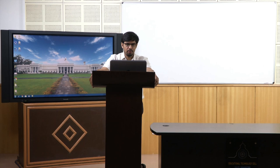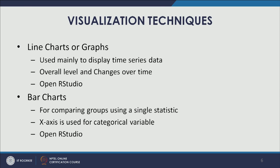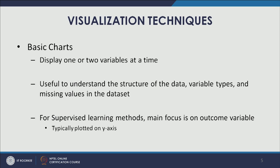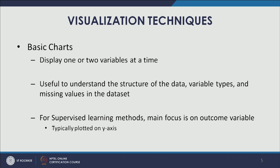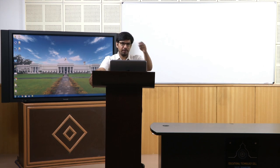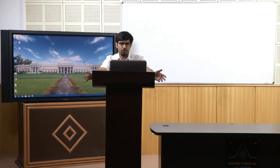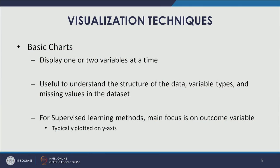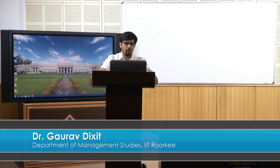Let's start our discussion on basic charts. Three important charts we are going to discuss are line charts, bar charts, and scatter plots. Generally these basic charts display one or two variables at a time — two-dimensional graphics with one variable on the X axis and one on the Y axis. The main idea is to understand the structure of the data, variable types, and missing values in the dataset.